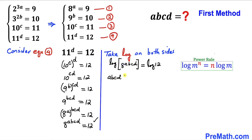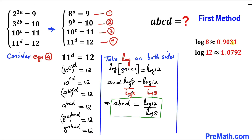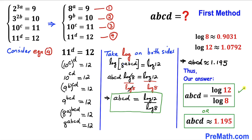Dividing both sides by log(8), we get a times b times c times d equals log(12) divided by log(8). Plugging in the values of log(8) and log(12), our abcd value is approximately equal to 1.195. That's our answer — in logarithmic form as log(12)/log(8), and in decimal form as approximately 1.195.